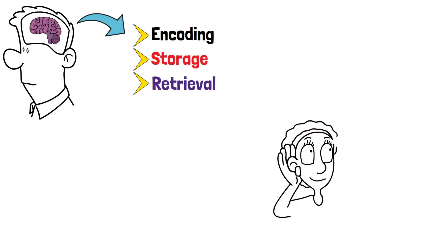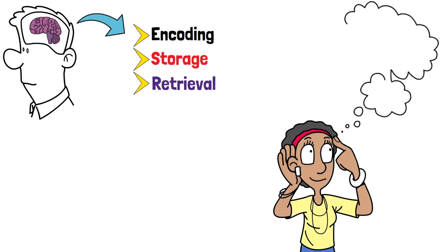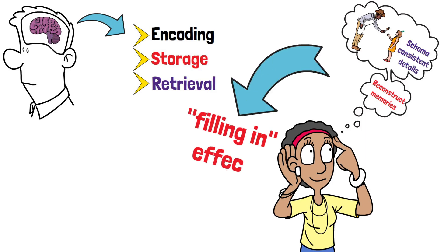In memory, schemas play a crucial role. They influence encoding, storage, and retrieval. When recalling an event, people often reconstruct memories, filling in gaps with schema-consistent details. This filling-in effect explains why memories are sometimes inaccurate.